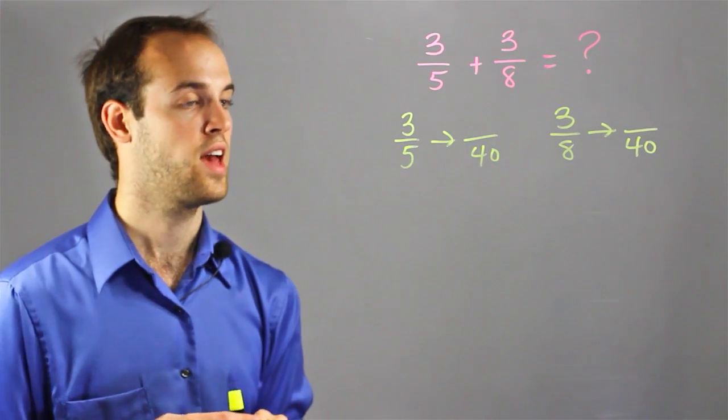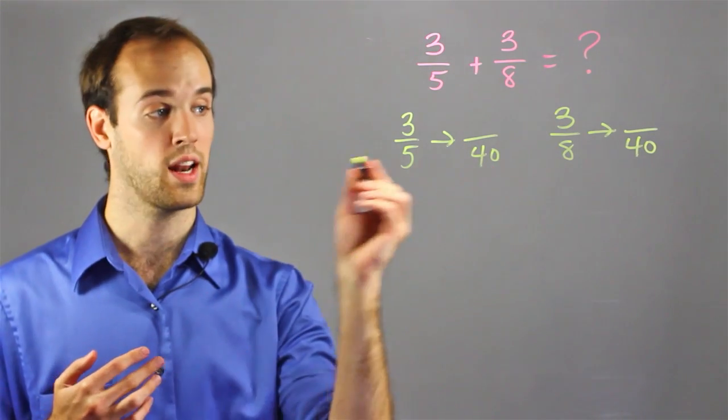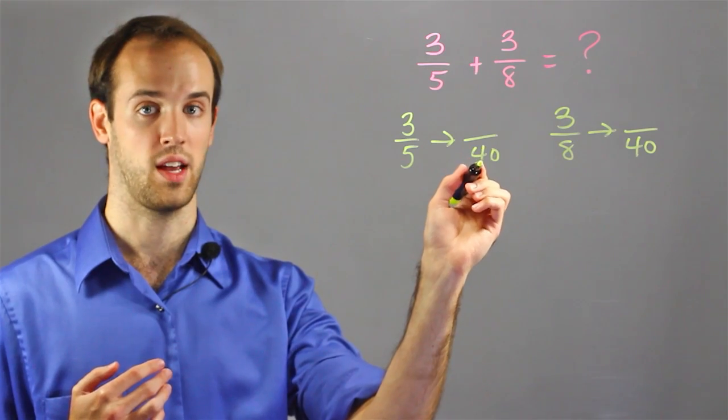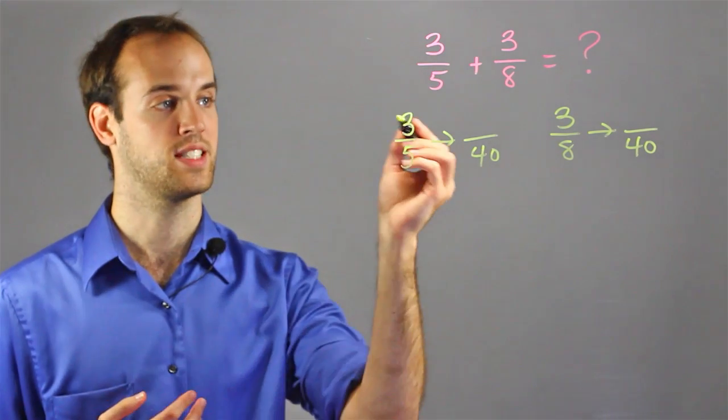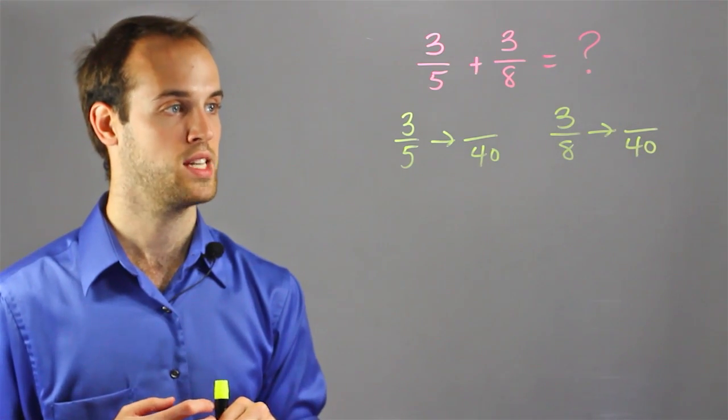So I'll start with 3 fifths, and what I want to do is ask myself, what did I do to 5 to get it to change to 40? And the answer is, multiplied it by 8. So I have to do the same thing to the top. So 3 times 8 is 24.